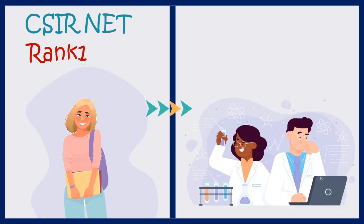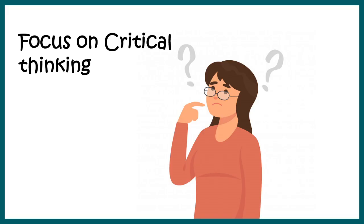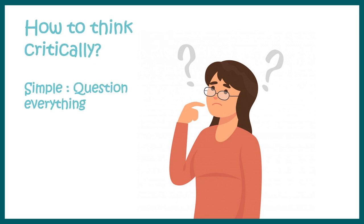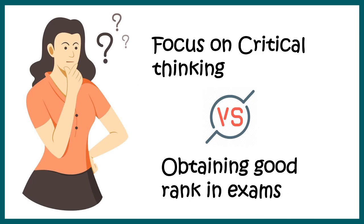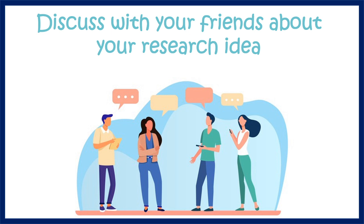Even a CSIR rank one doesn't ensure you will be a very good researcher. What really matters is focusing on critical thinking ability. In interviews and in the long run, what scientists look for in you is your thinking skills — how well you can think and how creative you are. The way to think critically is to start questioning everything you come across; that gives you an inquisitive mindset. A good balance between critical thinking and obtaining a good rank is what truly pushes you toward success.